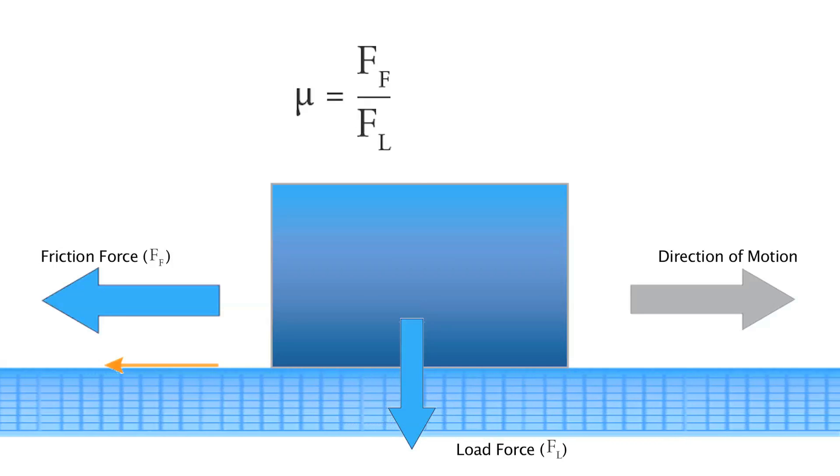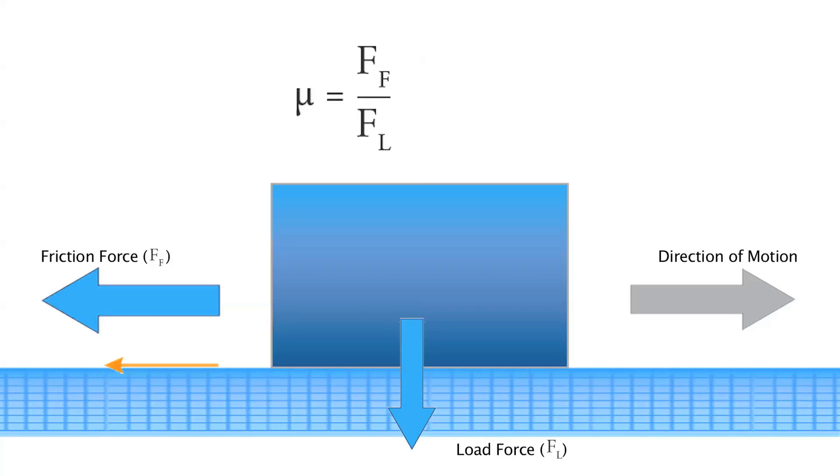In the case of a rotational rheometer, the coefficient of friction is calculated by dividing the shear stress in the rotational direction by the normal stress in the axial direction.